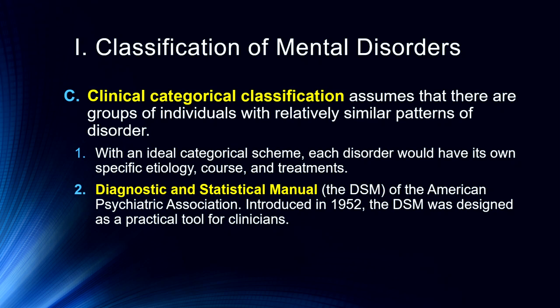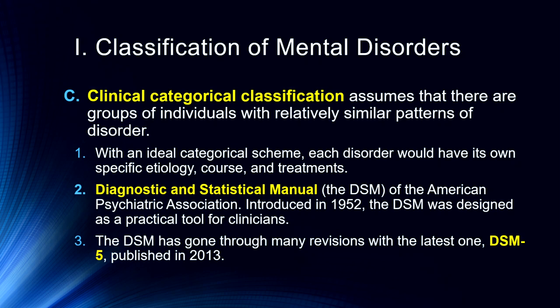That gets us to the Diagnostic and Statistical Manual of Mental Disorders, or the DSM. This was originally introduced in 1955 and was designed as a practical tool for clinicians. We're now on DSM-5, and it's being updated more electronically. If you go to the DSM website — just Google DSM-5 — it'll take you to the American Psychiatric Association, where there are some really great tools. The DSM is like all things written by a committee: useful, but messy.